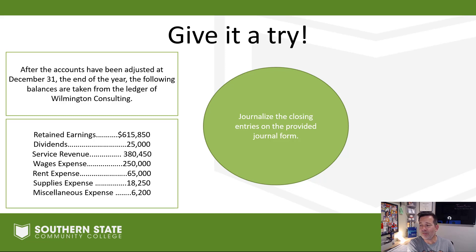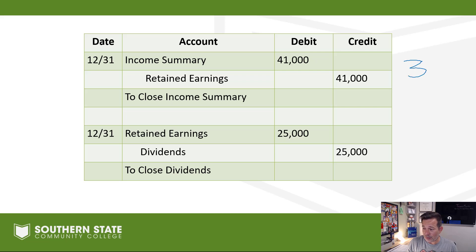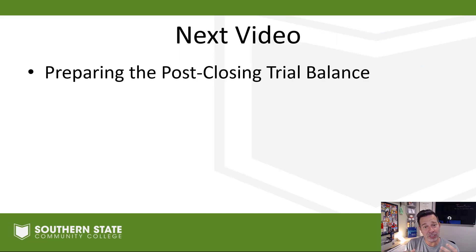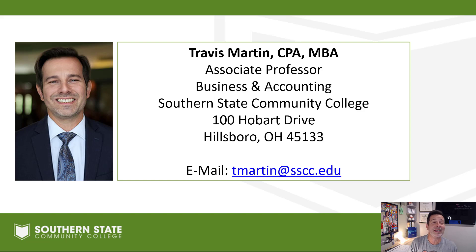Hopefully you've had a chance to go through that and make some closing entries. Here's what you should have come up with: entry one, closing out the revenue accounts; entry two, closing out the expense accounts; entry three, closing out income summary; and entry four, closing out dividends. We have one more video in the chapter — we'll look at the post-closing trial balance, our final trial balance. After that, we'll be ready to start a new accounting cycle. If you have any questions about closing entries, feel free to reach out anytime. Take care, everybody.